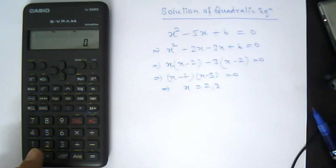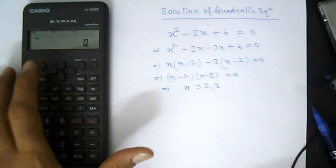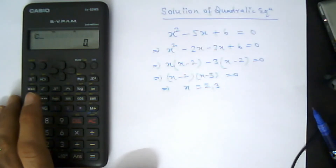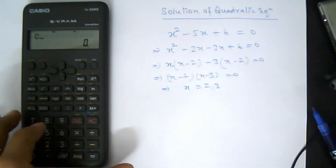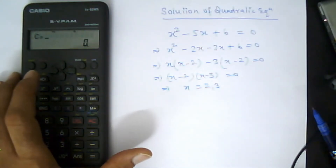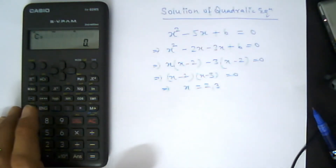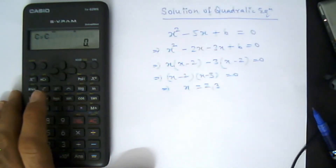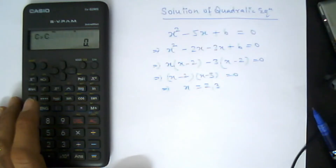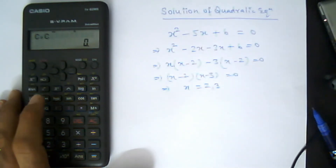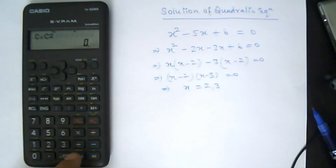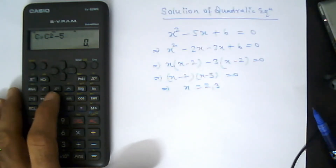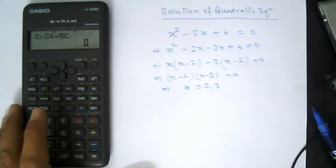The calculator is now ready to type the equation. To enter the equation, first press the Alpha key, then press the high function button (C). Press comma, then again press the Alpha key and press the C (high) button. The equation is x² - 5x + 6 = 0, so press the square button to get C², then press minus, then 5, then press Alpha and the high button again for 5C.